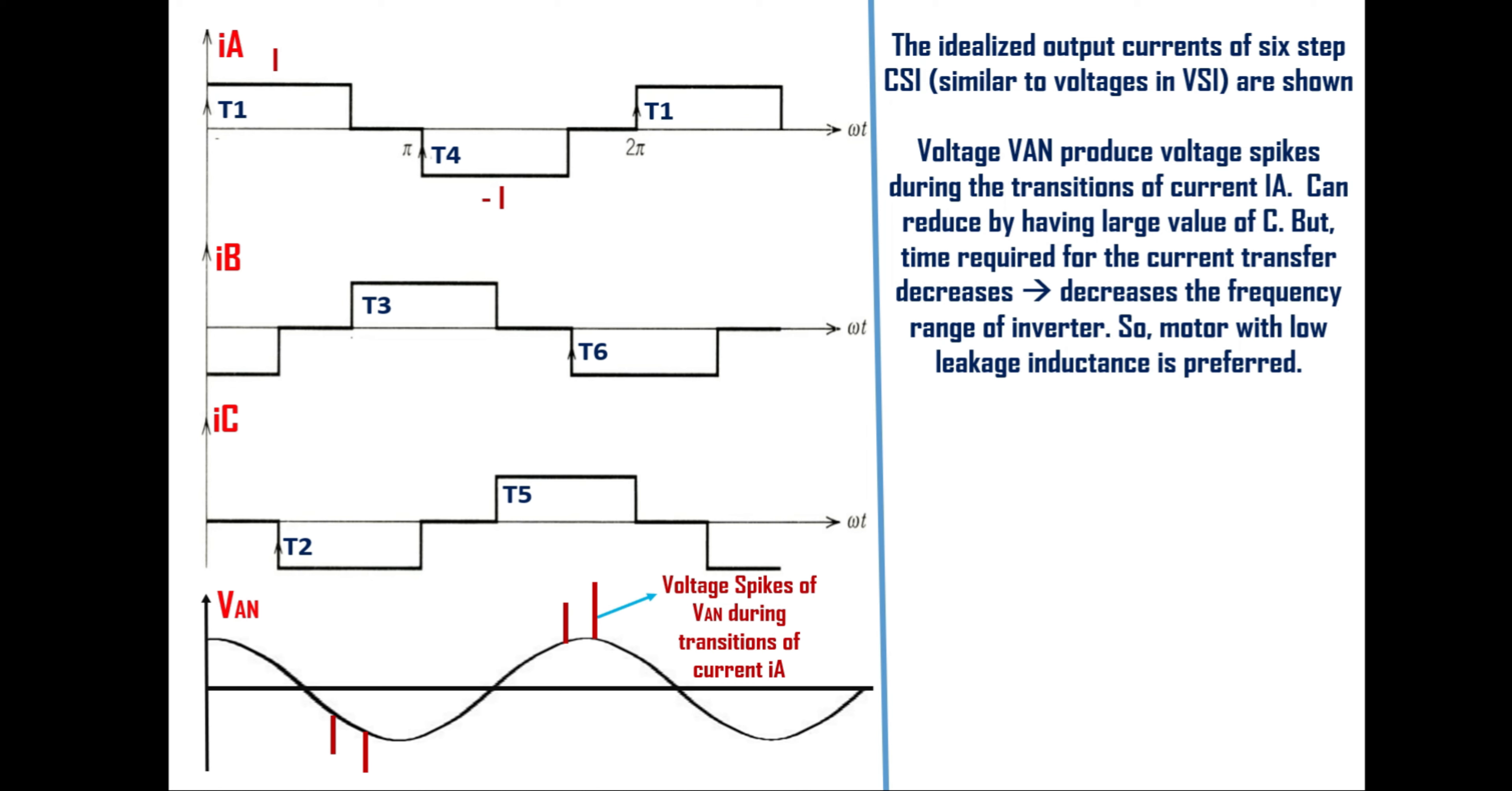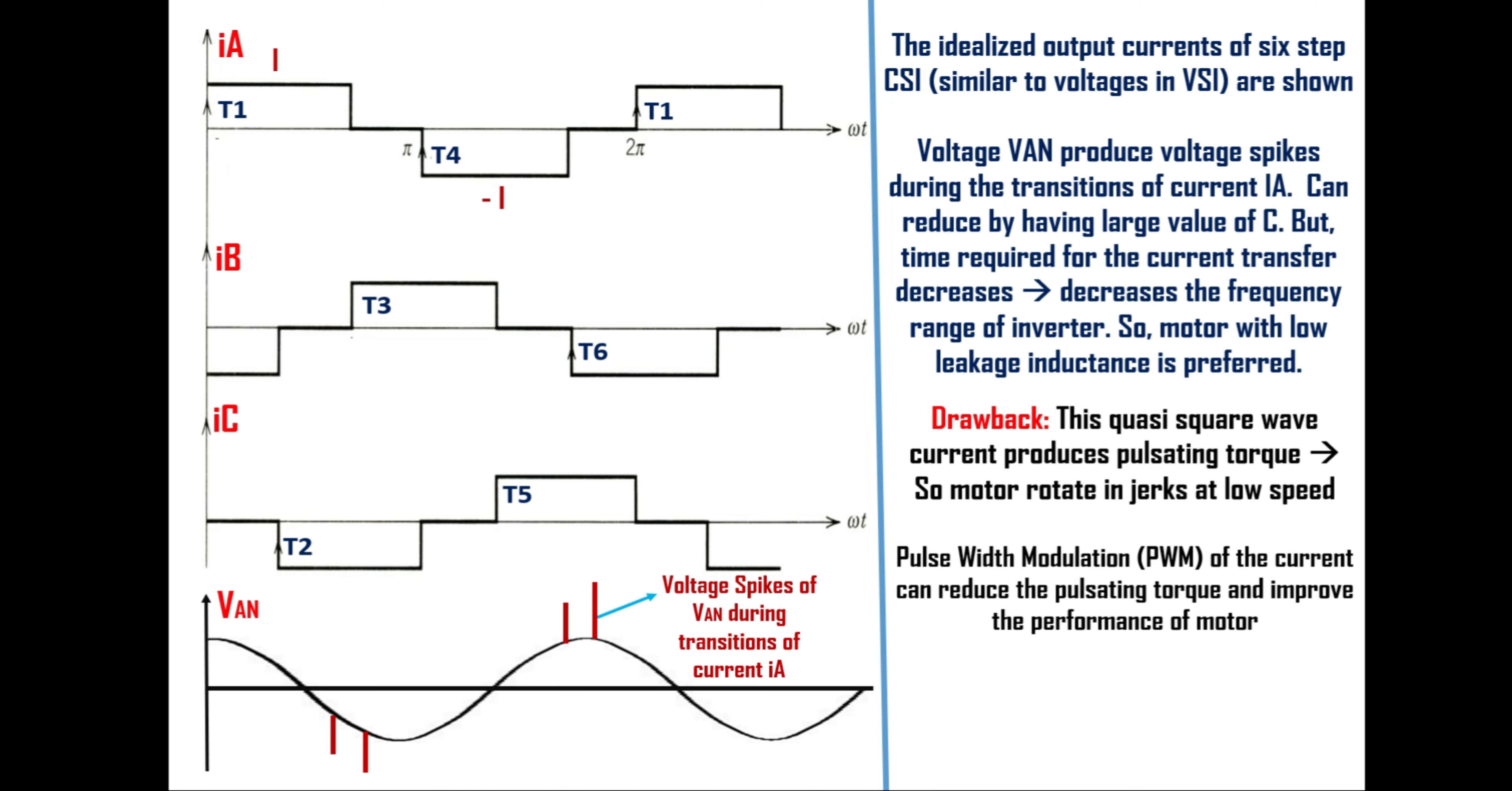The drawback of current source inverter is its quasi square wave current waveform. This current produces pulsating torque and motor will rotate in jerks at low speed. To overcome this pulse width modulation of current can be used. This can reduce the pulsating torque and also it can improve the performance of the motor. To understand the pulse width modulation of current source inverter please refer this IEEE paper.